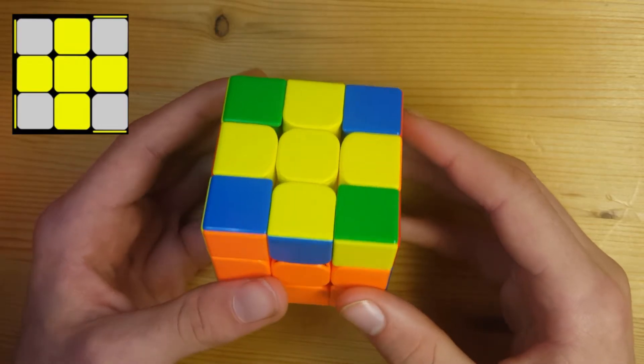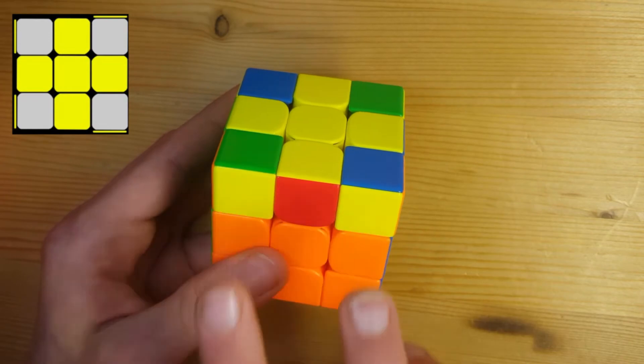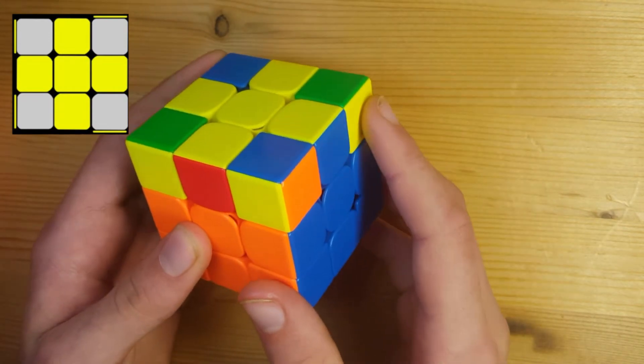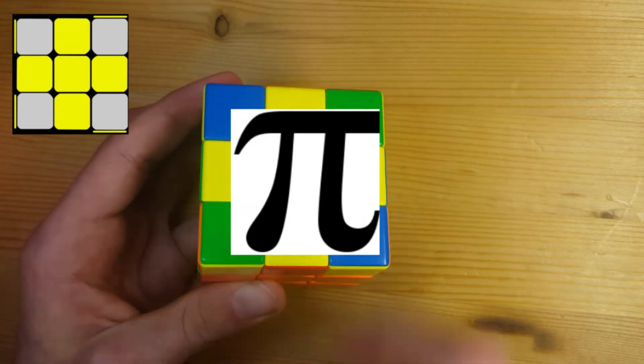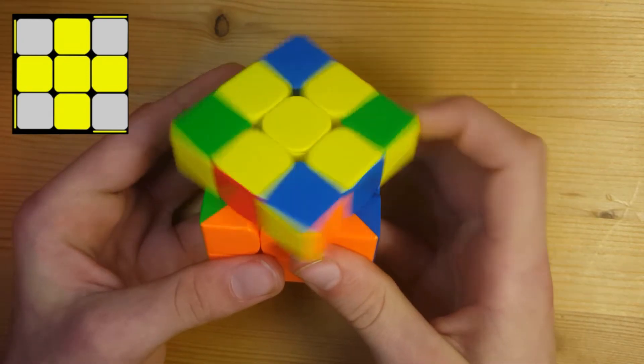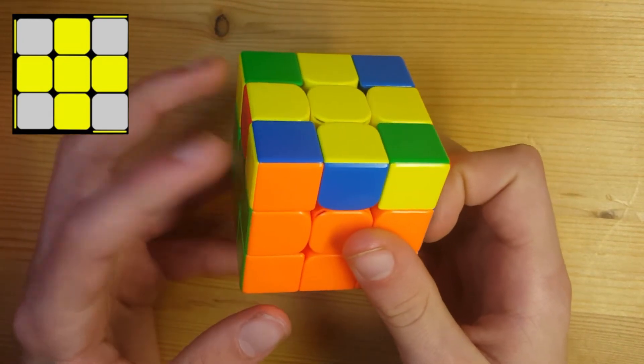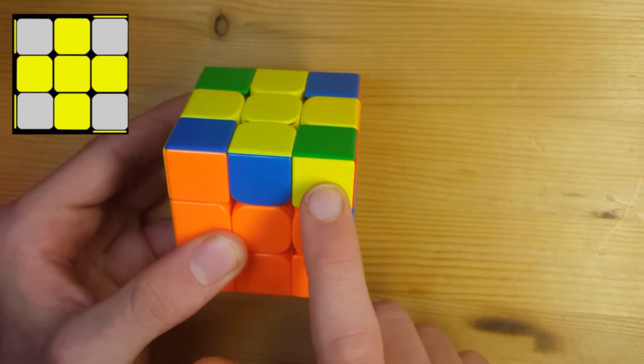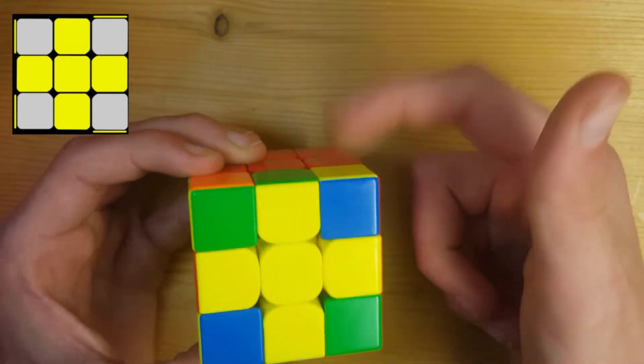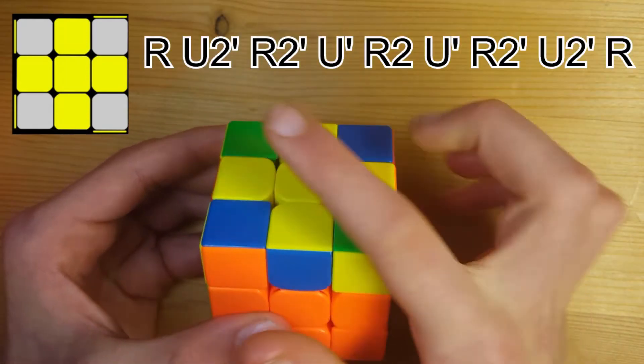The other case is called Pi. It's called that because two of them face towards you and then two of them face to the sides on the top. So it kind of looks like the Pi in math. This one you're going to hold like this so that these two headlights, they're called, are facing to the left and then the ones on the right are facing down and up. This is how you solve this case.